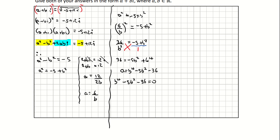This is starting to look like a quadratic except the highest degree is 4. So I'll use u-substitution, letting u equal b squared. This gives u squared minus 5u minus 36 equals 0. Factoring by finding multiples of 36 that add to negative 5 gives negative 9 and positive 4.